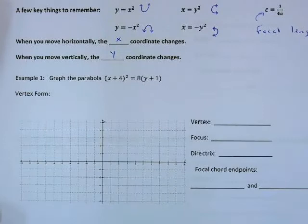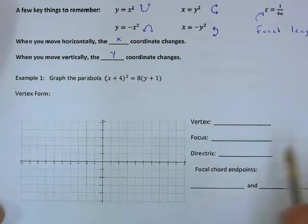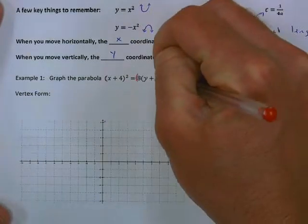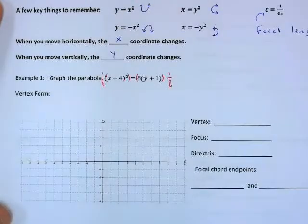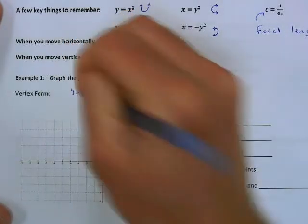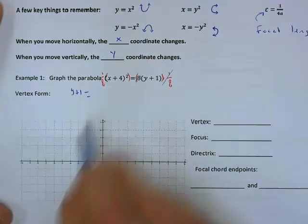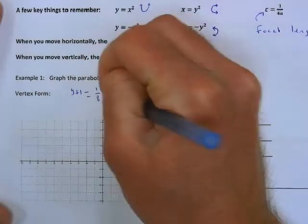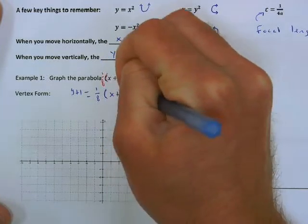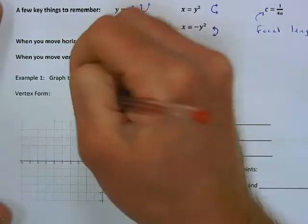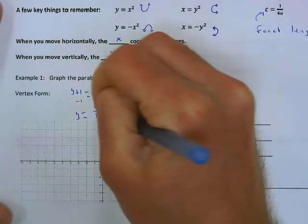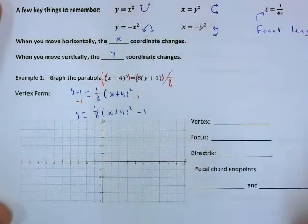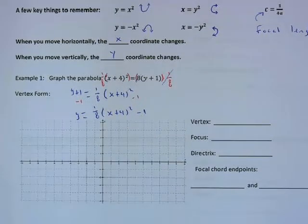We want to get rid of the 8 and the plus 1. Instead of distributing the 8, let's multiply both sides by 1/8 right away. The 8 and the 1/8 reduce, giving us y + 1 = (1/8)(x+4)². Then subtract 1 from both sides: y = (1/8)(x+4)² - 1. Now we have our equation in vertex form, and 1/8 is our a value.